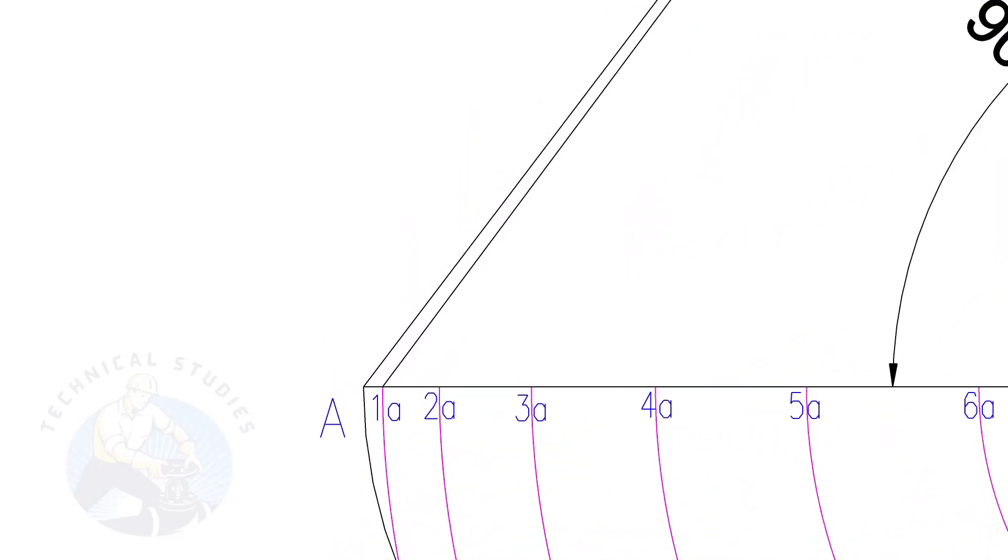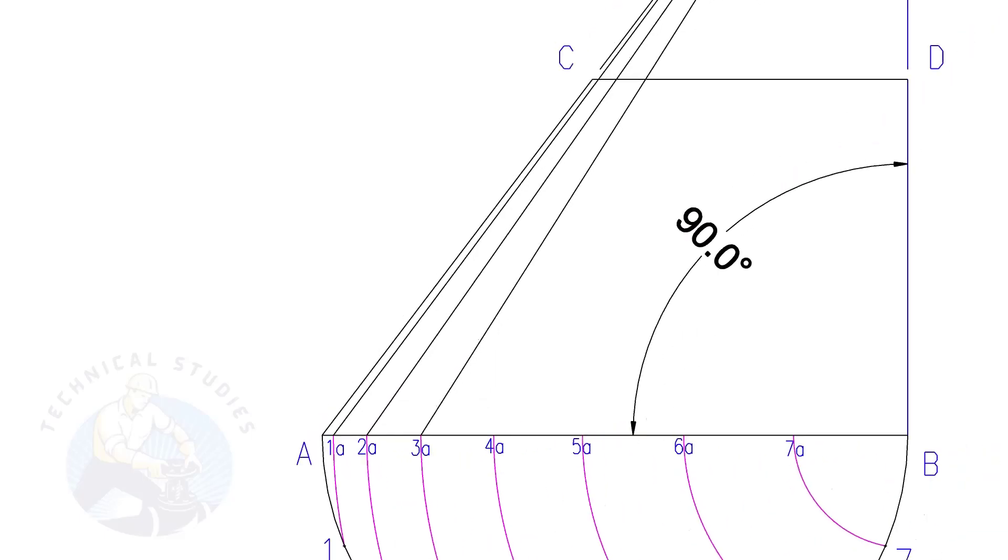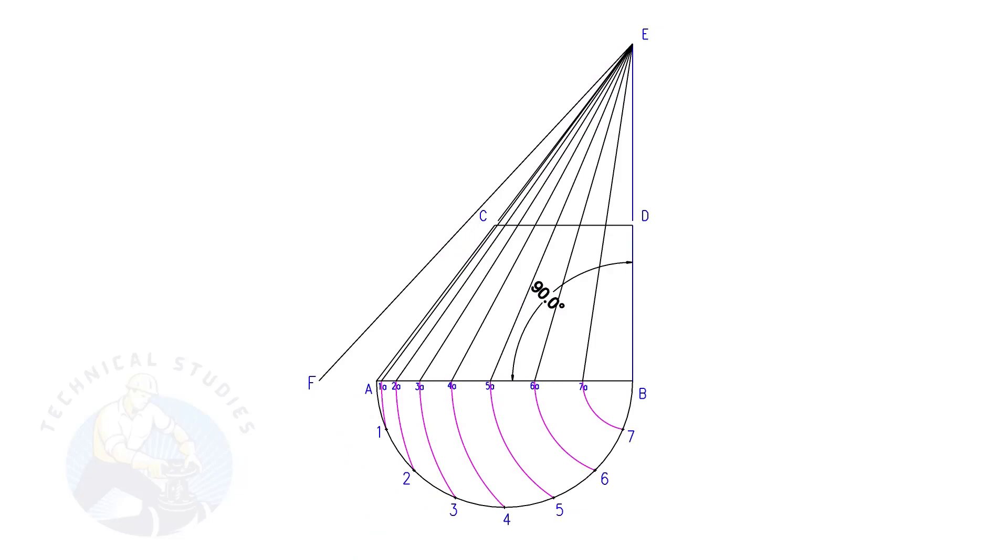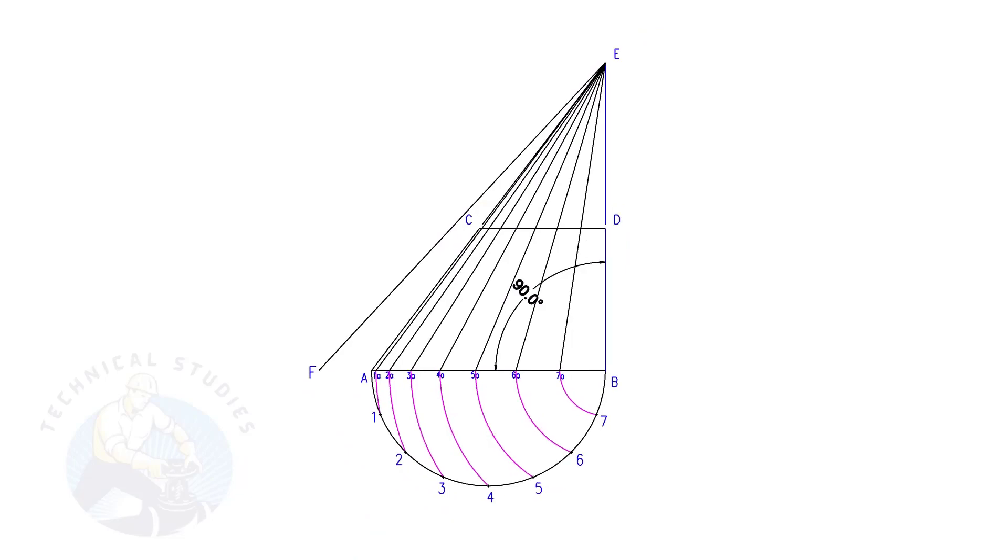Draw lines from 1A, 2A, 3A, etc. to point E. Draw line EF. This is a reference line only.